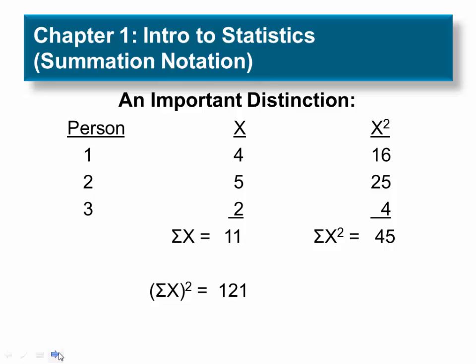Throughout this text, you must be attentive to the difference between two summation quantities: ΣX² or (ΣX)². ΣX² is the sum of each squared score. (ΣX)² is the square of the sum of the scores. The symbol ΣX² directs that each X score be squared first, and then the squared values are summed.